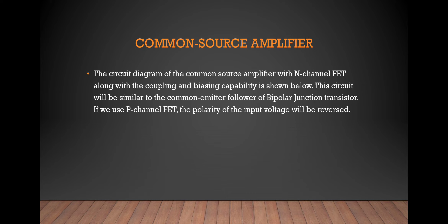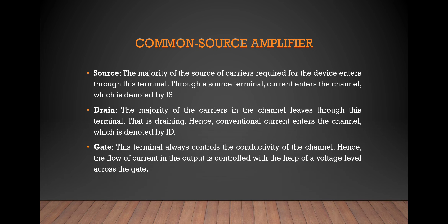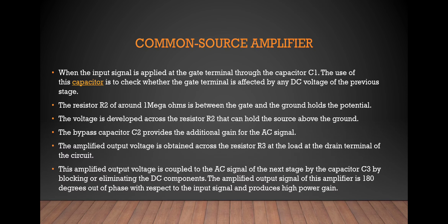The circuit diagram of the common source amplifier uses an N-channel FET along with coupling and biasing components. The majority of source carriers are required for the device and enter through this channel through the source terminal. The drain terminal is denoted as D, and the gate terminal, which always controls the conductivity of the channel, is denoted as G.